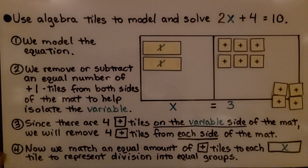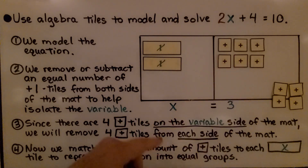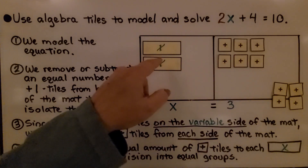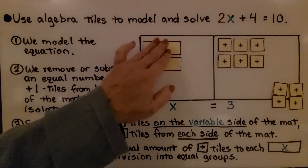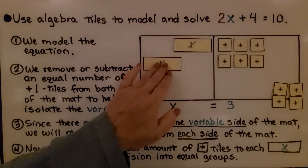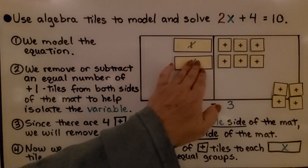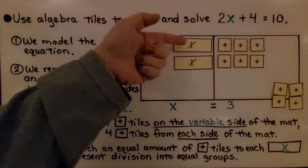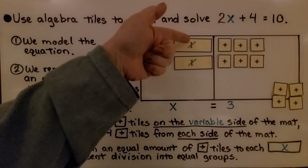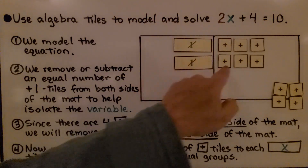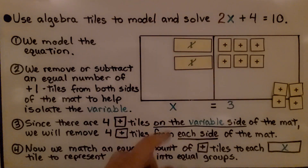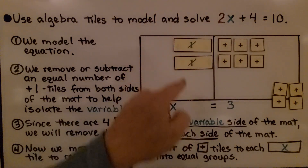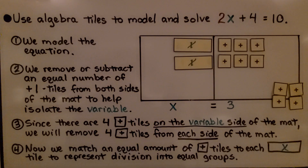Now we do the next step. We match an equal amount of plus tiles to each of the x variable tiles. If we put one group here and one group here, we have x is 3 and x is 3. We know each x is equal to 3.